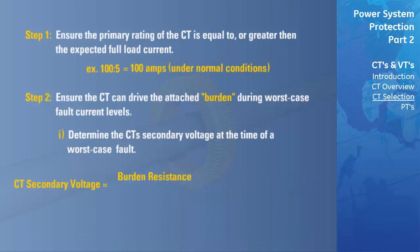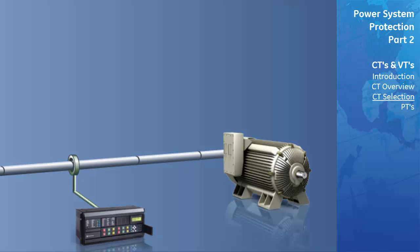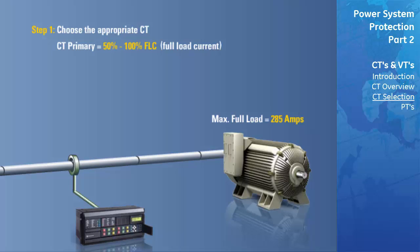Now we will look at a practical example. Let's assume we have a motor that draws a maximum full load current of 285 amps. The first step is to choose the appropriate CT. It is customary to select a CT with a primary rating falling between 50 to 100% of the maximum full load current — in this case 285 amps. Possible CTs for this use would be 300 to 5, 400 to 5, and 500 to 5 CTs, because the primary rating falls between 50 to 100%. We would select the CT closest to 100%, since the higher the CT ratio is over the full load current, the less sensitive that CT will be. Since accuracy is always imperative, we will select a CT with a 300 to 5 amp conversion, where the primary rating of 300 is closest to the 100% primary rating.